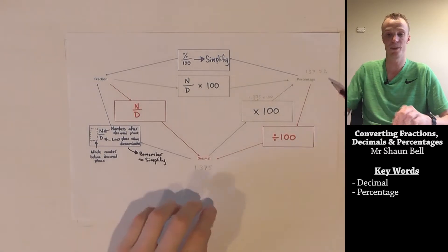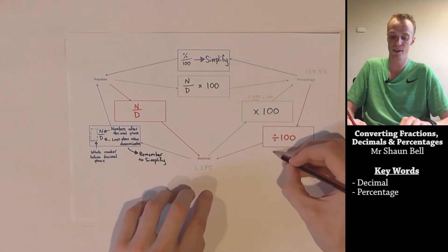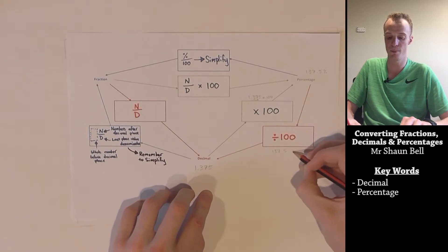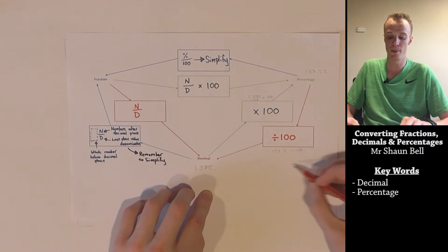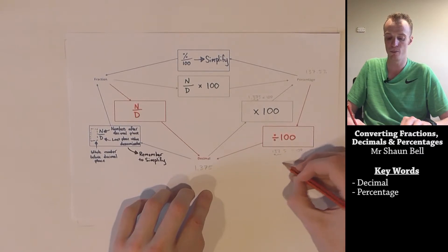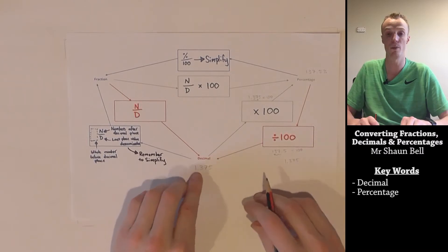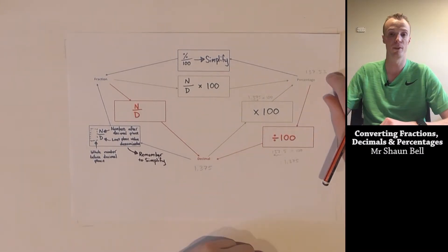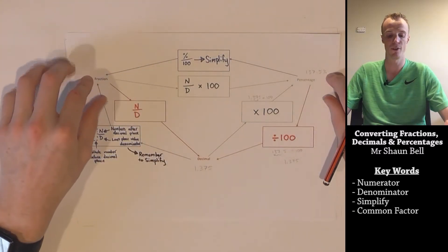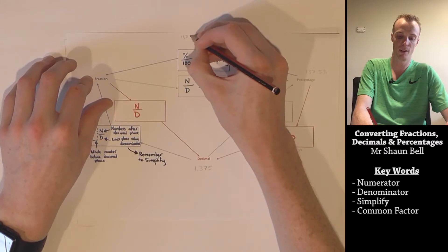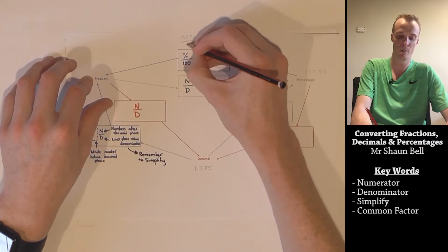If we wanted to convert this percentage back to the decimal, we take 137.5% and divide by 100. To divide by 100, we move the decimal place back two places, giving us 1.375, which is what we had to begin with.